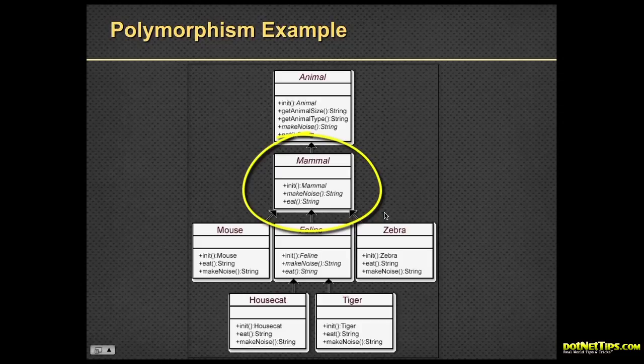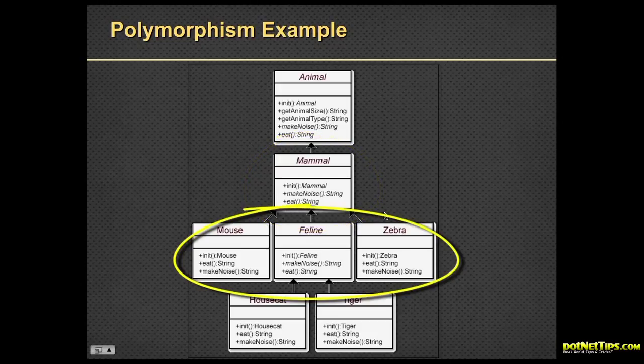You can see here, an animal might eat one way, and a mammal probably most often will eat a different way, with teeth. So now, we're going to take it to the next level, and we're going to use mammal, and we're going to create three more types. We're going to create a mouse, a feline, and a zebra, which inherit from mammal, which inherits from animal. A mouse, of course, has a different eat and a different make noise, same as feline and same as zebra.